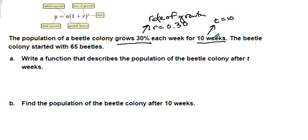Make sure you remember, sometimes they'll give you something in weeks and years and you've got to convert one to the other so that you're in the same time span for both. It says the beetle colony started with 65 beetles, so this starting with 65 beetles, this is my a. So my a is equal to 65.